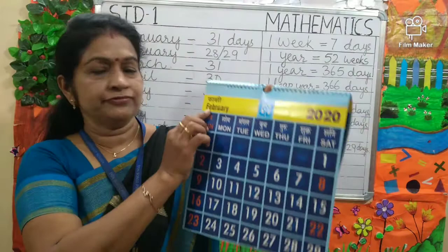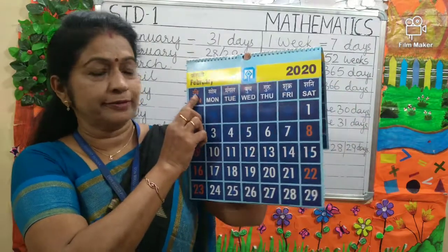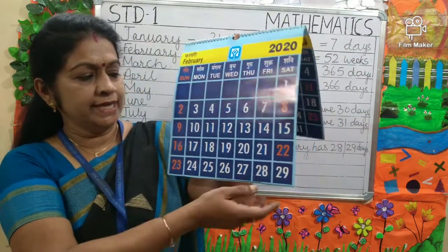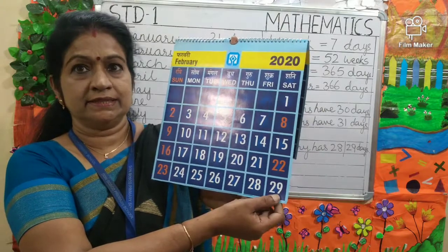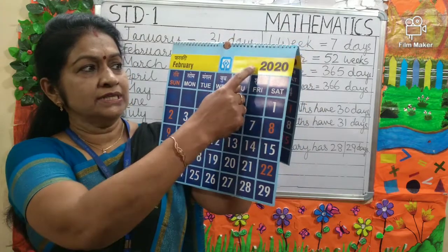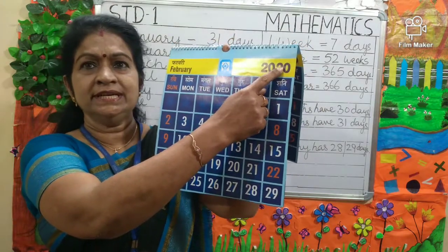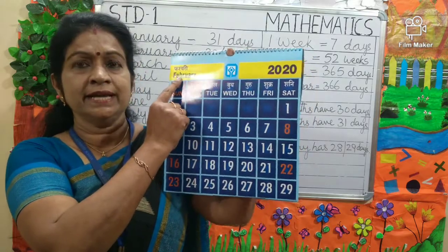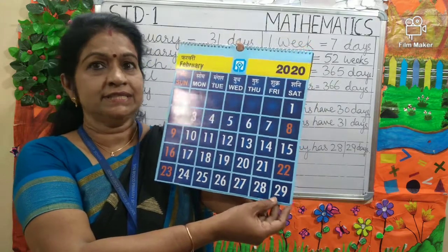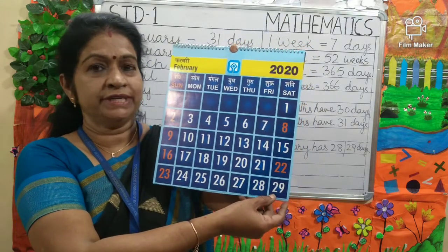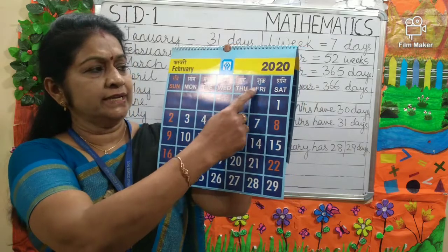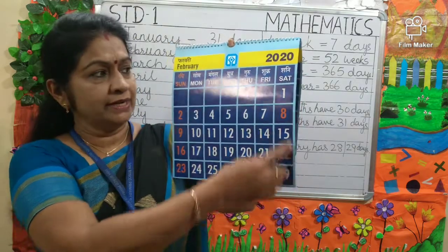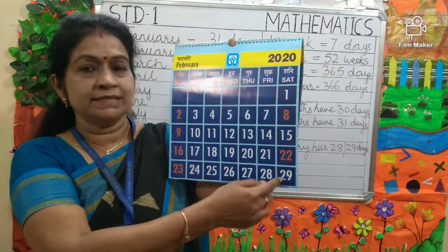Next is February. February is the second month of the year and it has 29 days, because 2020 is a leap year. In a leap year, February has 29 days; otherwise it has only 28 days. Can you say which day is 29th of February? It is Saturday.